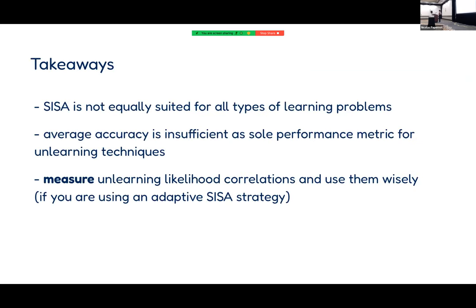The takeaways: first, SISA is not equally suited for all types of learning problems — if you have a class imbalance of only 1:10, a primitive approach such as random undersampling can provide an equivalent speedup for retraining while also giving better minority class performance. Second, recording average accuracy alone is not sufficient to determine whether an unlearning technique is truly suited for all kinds of learning problems. Third, it's really important to measure the unlearning likelihood correlations that exist within your training dataset and use them wisely if you're using an adaptive SISA strategy.